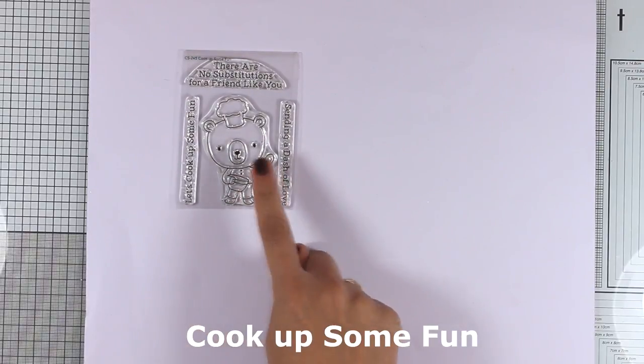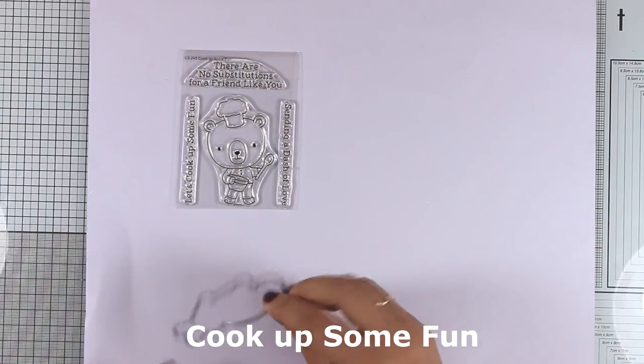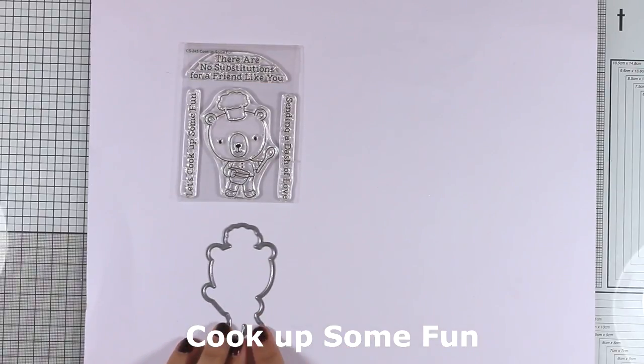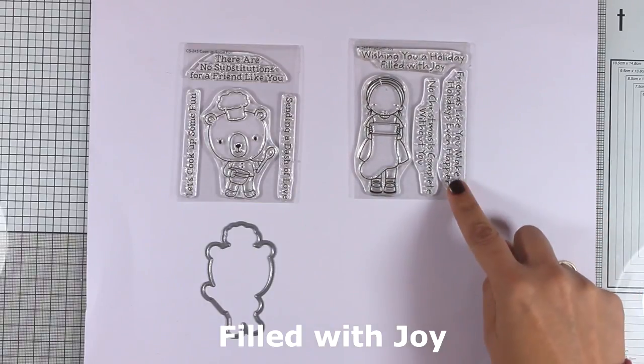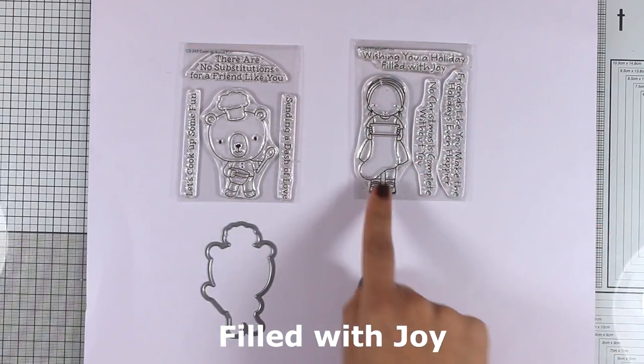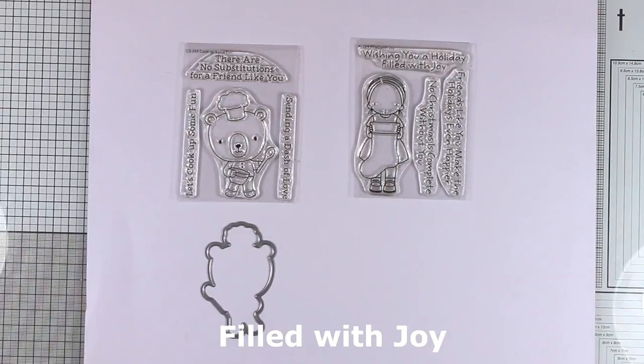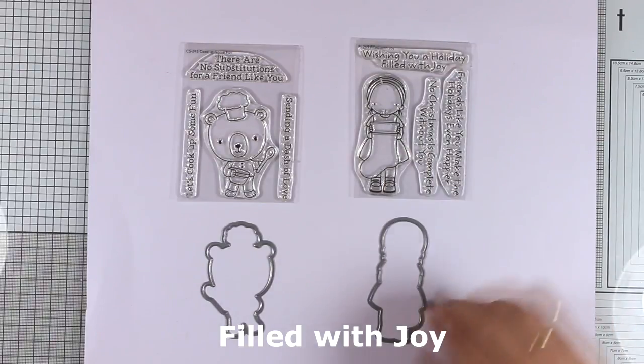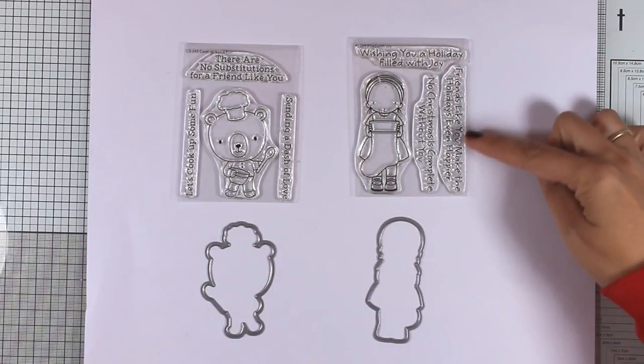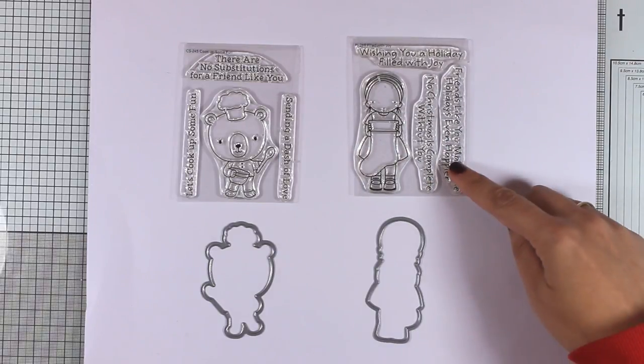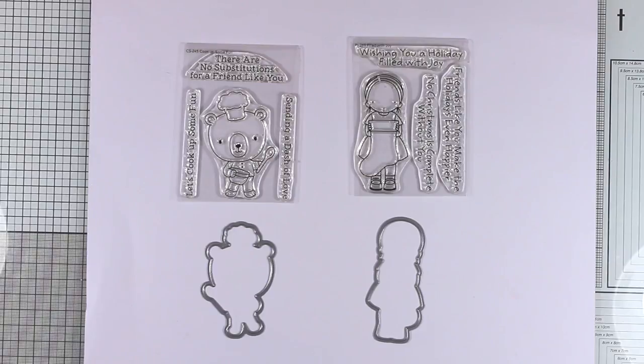This is Cook Up Some Fun. You get this adorable little bear that is cooking and of course matching sentiments. Another small stamp set is our favorite little girl, this time she's holding a stocking, and it's called Filled with Joy. I think she is perfect to stamp, color with your favorite medium, cut out, and stick on top of your Christmas gift tags.